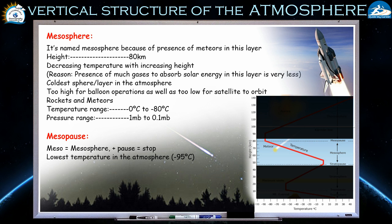The third layer is the mesosphere. It is named because of the presence of meteors in this layer. At the bottom of the slide you can see a meteor falling in night-sky conditions. The height of the mesosphere is 80 kilometers. The temperature behavior here is similar to the troposphere — temperature decreases with increasing height.